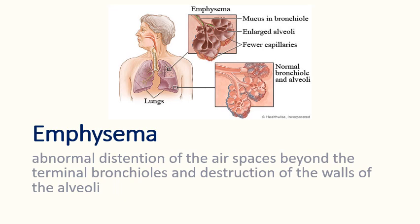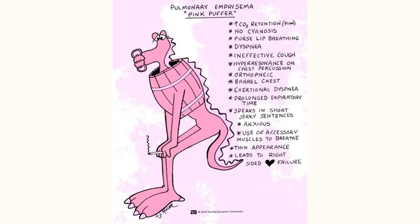Let's discuss emphysema, a type of COPD. In emphysema, there is abnormal distension of the airspaces beyond the terminal bronchioles and destruction of the walls of the alveoli. The key characteristic is air trapping. Emphysema patients are commonly referred to as pink puffers because of increased CO2 retention — CO2 is a potent vasodilator, giving the patient a pink appearance — with no cyanosis. They have pursed-lip breathing, dyspnea, ineffective cough, hyperresonance on chest percussion due to air trapping, orthopnea, barrel chest, exertional dyspnea, and prolonged expiratory time.